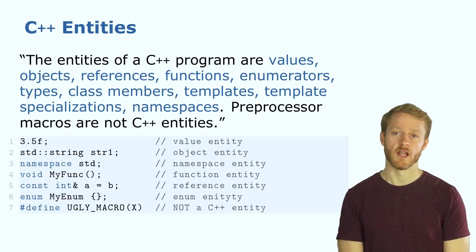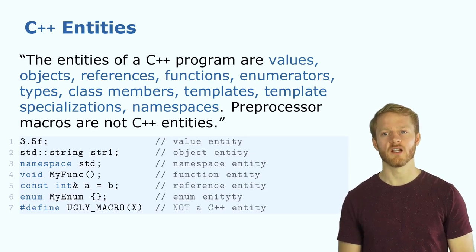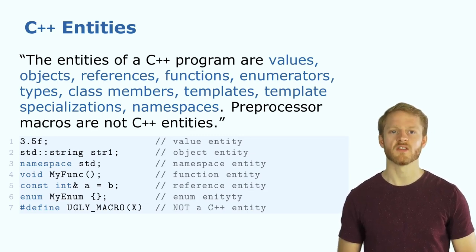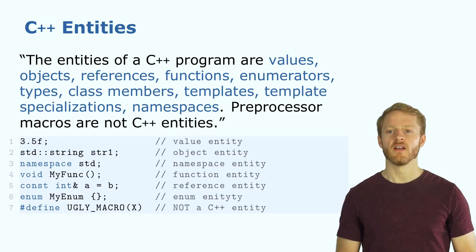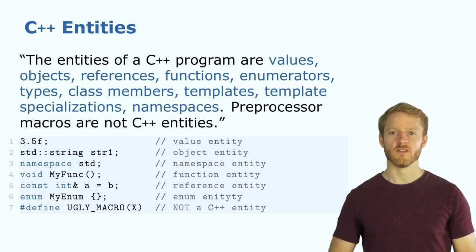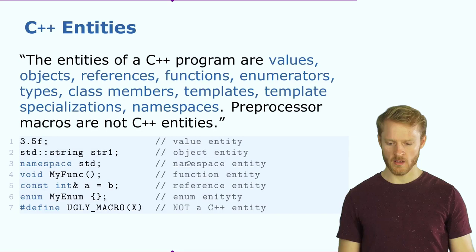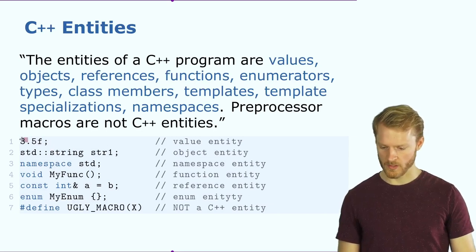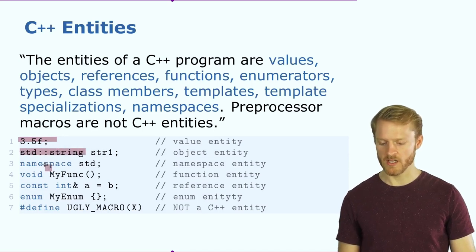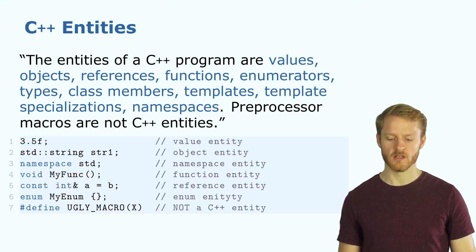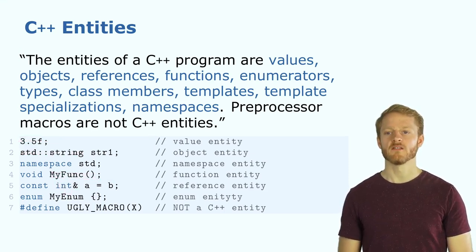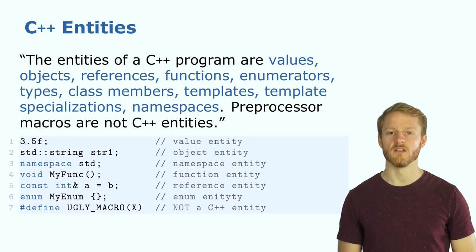What's an entity in C++? Entities are values, objects, references, functions, and more — except macros, which we will not cover in this course. We have different entities: values like a float value, objects like a string, namespaces, functions, references, and the list continues. Those are just definitions.